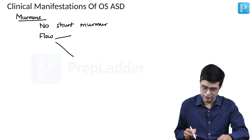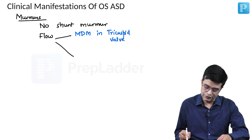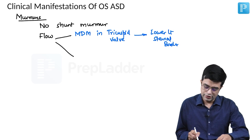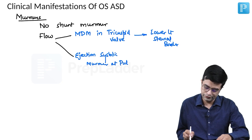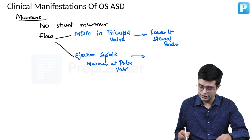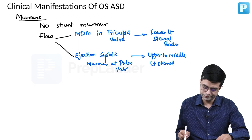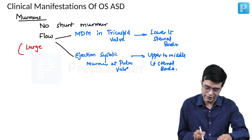There are two types of flow murmurs which are heard. First is the mid-diastolic murmur, which is heard in the tricuspid region and will be heard best in the lower left sternal border. Then you will have an ejection systolic murmur at the pulmonary area, usually heard in the upper to middle left sternal border. Flow murmurs are usually heard in large, hemodynamically significant ASDs.